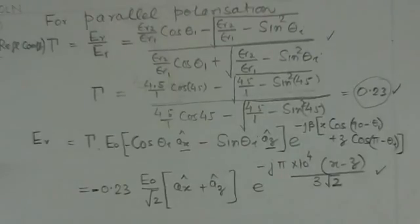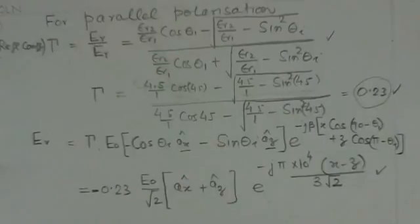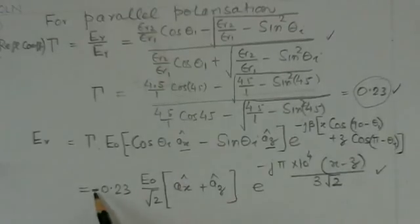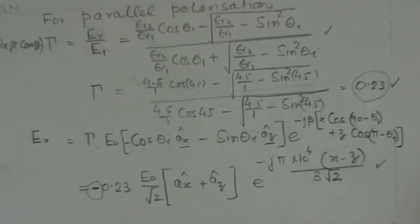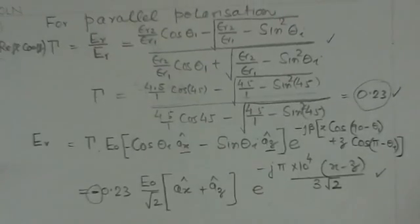By making the substitutions here and simplifications, we get a value -0.23 E_0/√2 (A_x + A_z) e^(-jπ × 10^4(x-z)/3√2). So this corresponds to option A in this problem. But the only difference here is we get a negative sign, and this sign is not given in option A, and I feel this sign should have been there, maybe. Thank you.